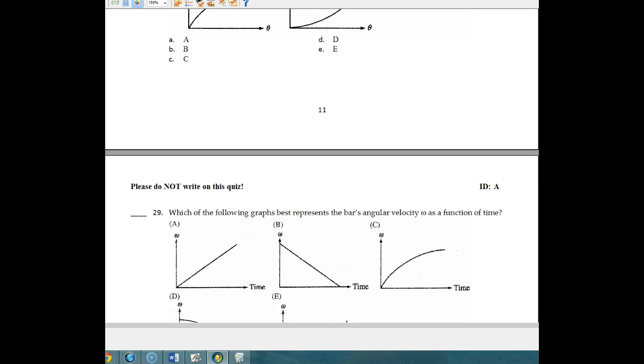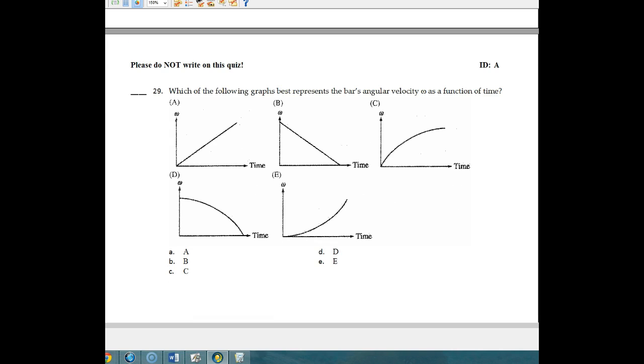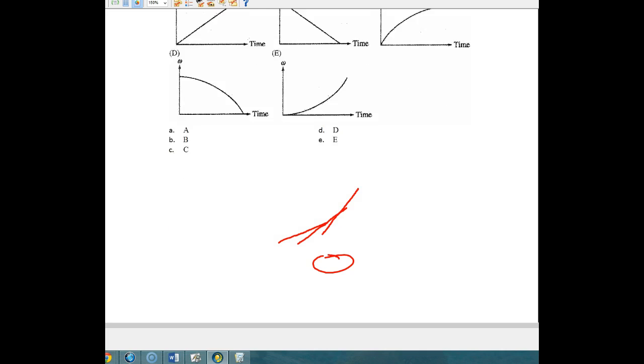For number 29, this one says which of the following best represents the bar's angular velocity as a function of time. And so the angular velocity as a function of time, we know that that velocity should increase as a function of time. And it should look very similar to this, where the derivative of that will give you the instantaneous acceleration at any particular time. So obviously what's happening to this is the acceleration is changing per unit time. And so that's why the previous graph kind of looks the way it does. That's a little bit more difficult concept to do because of the way that it falls.